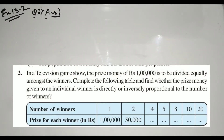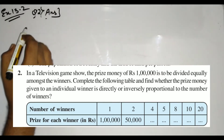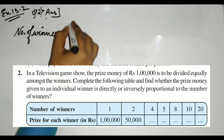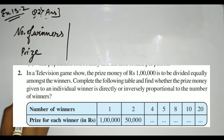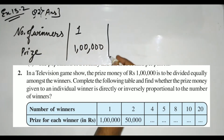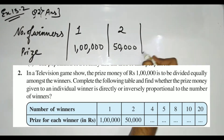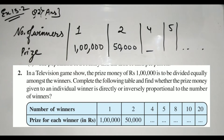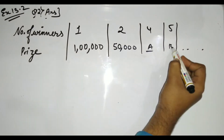Moving to question 2 of Exercise 13.2: in a television game show, the prize money of one lakh is to be divided equally among the winners. We need to complete a table and verify whether it is direct or inverse proportion. The table gives number of winners and prize for each winner — for 1 winner it is 1 lakh, for 2 winners it is 50,000, and for 4 winners we don't know.